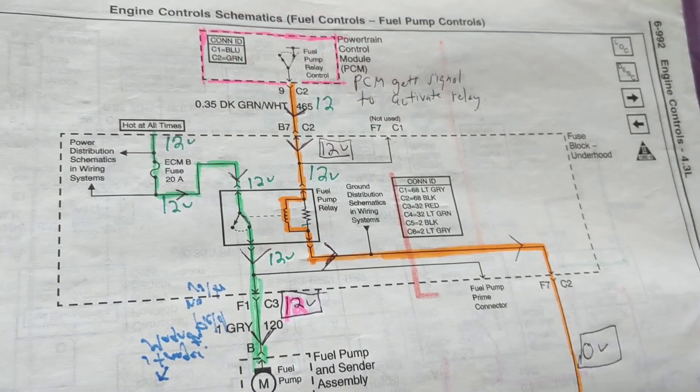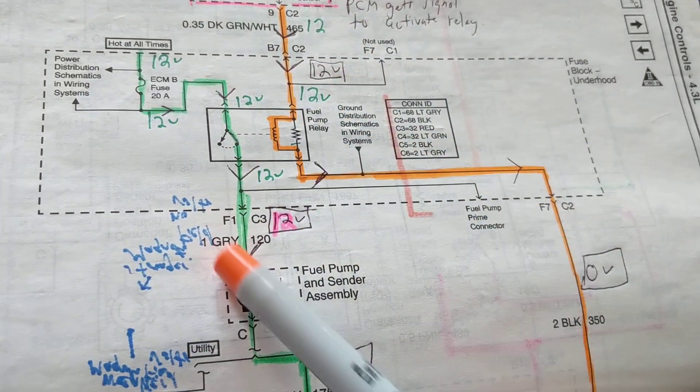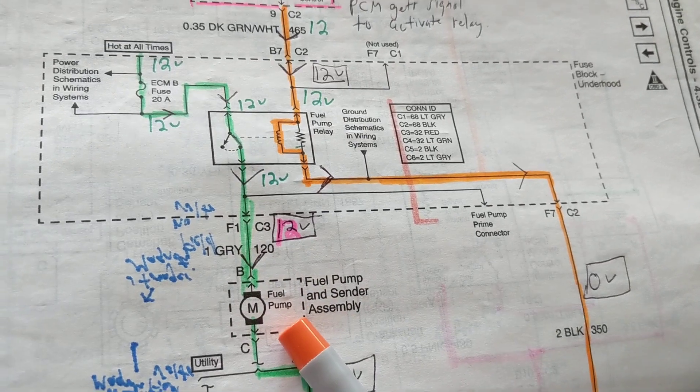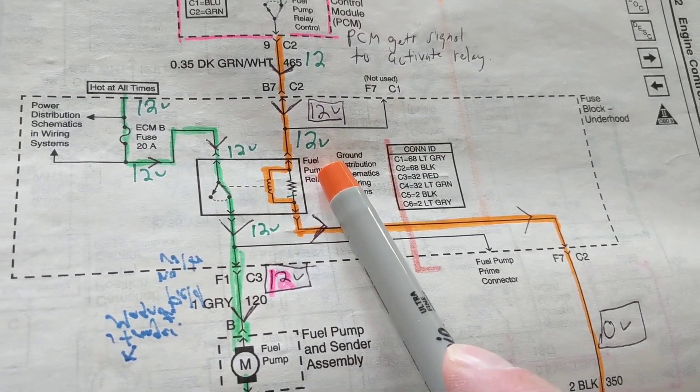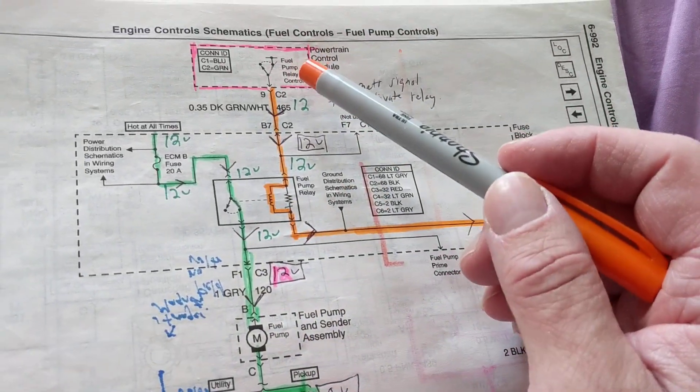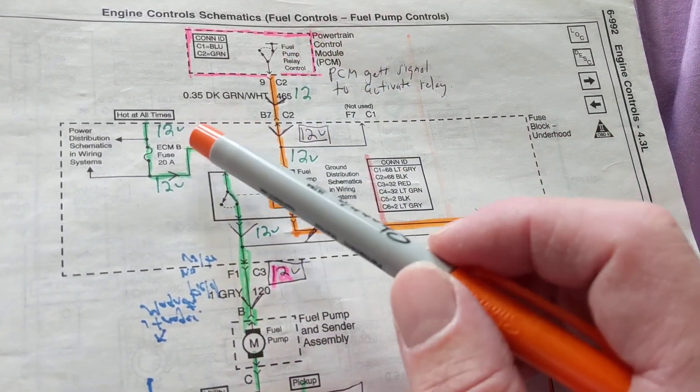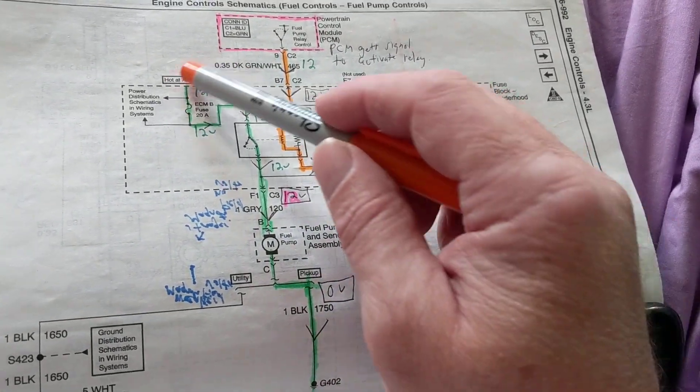Now the problem is, usually you get a computer. Computers are always involved. The PCM is always involved with turning on the fuel pump relay to turn on the fuel pump. As you can see, first goes the fuel pump relay which is activated, then goes the fuel pump.